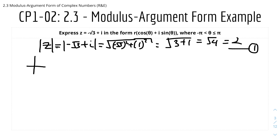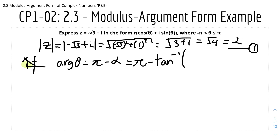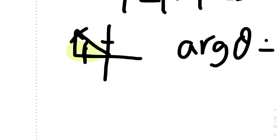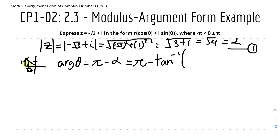Since z = −√3 + i, the point lies in the second quadrant. The argument in the second quadrant is π − α, where α is the reference angle. So the argument will be π minus tan⁻¹(1/√3). The opposite side is 1 and the adjacent is √3, giving 1/√3. A simpler way: take tan⁻¹ of the y component (which is 1) over the magnitude of the x component (which is √3), so tan⁻¹(1/√3).